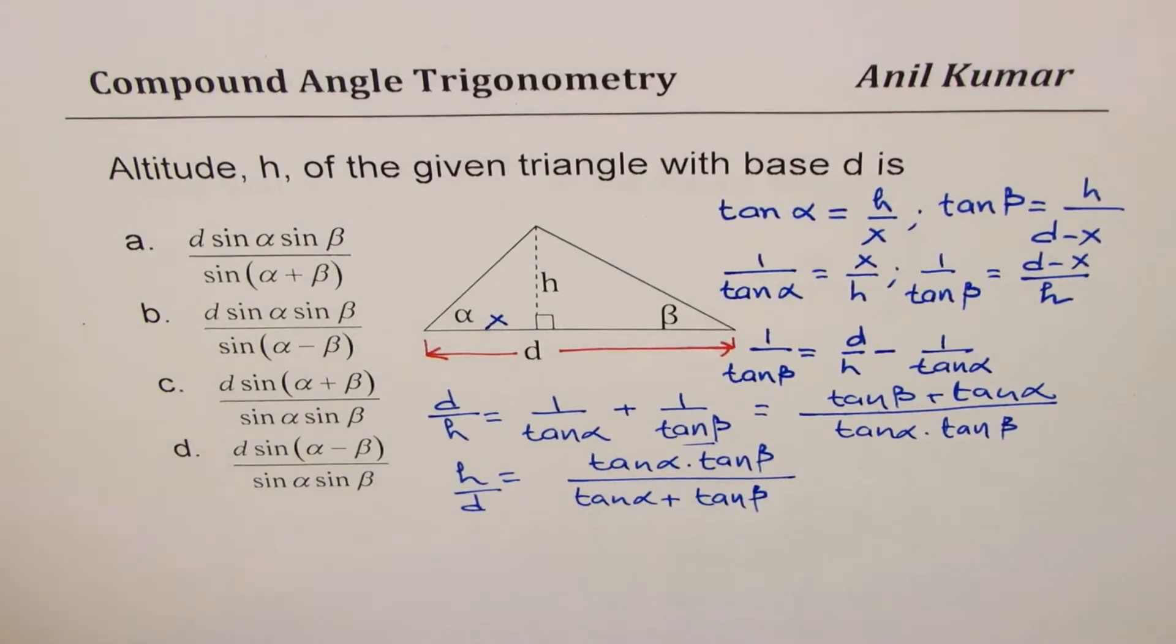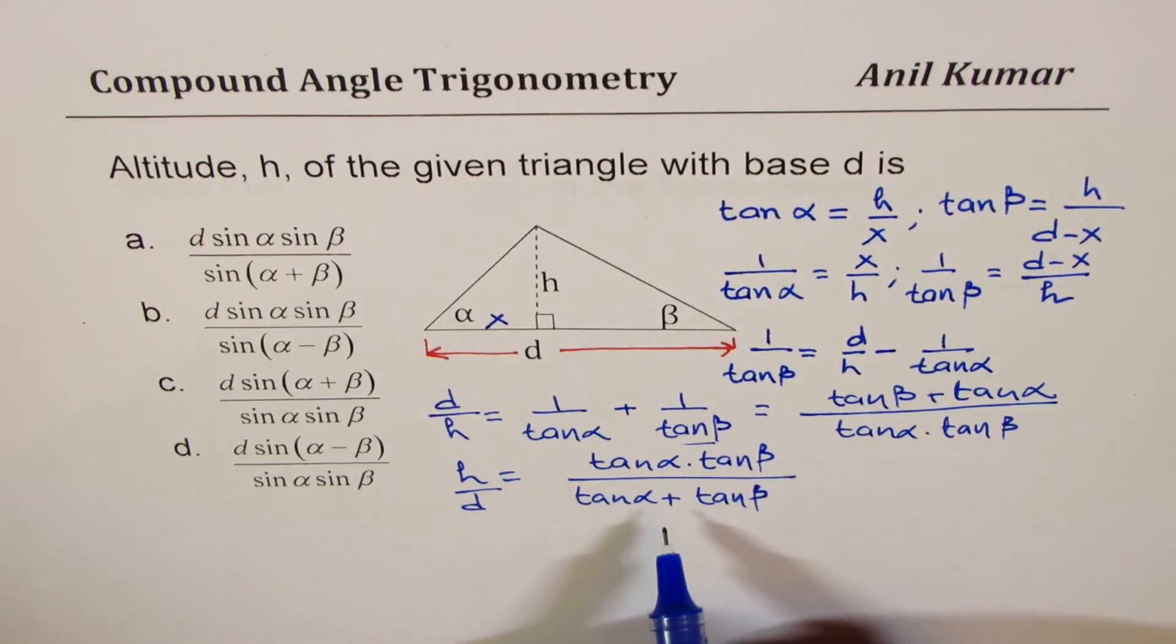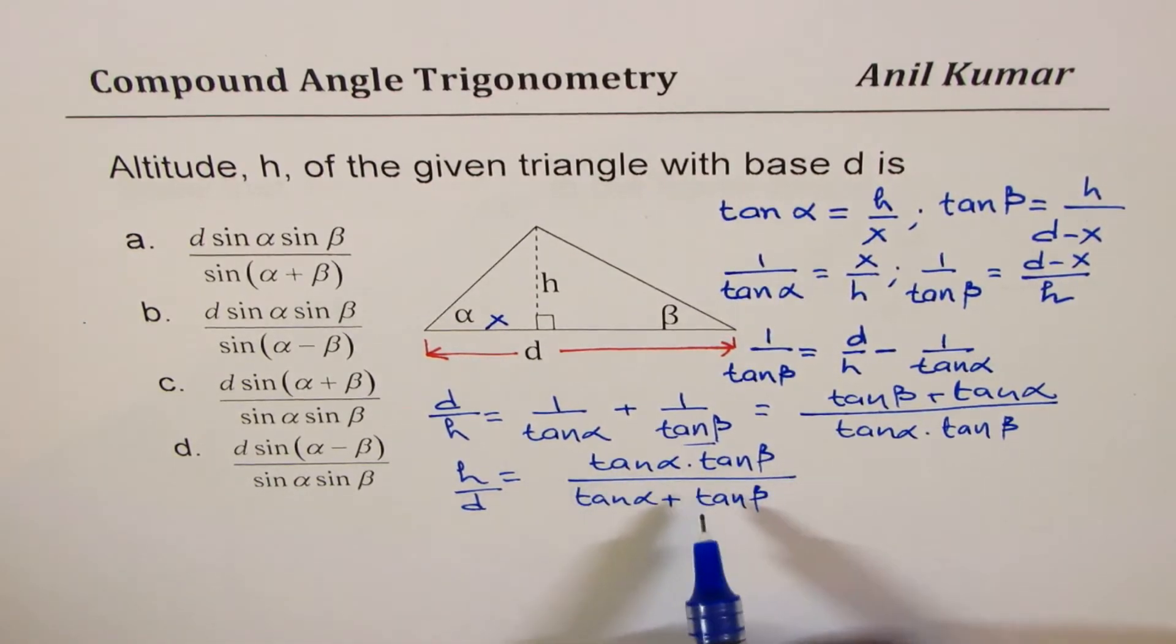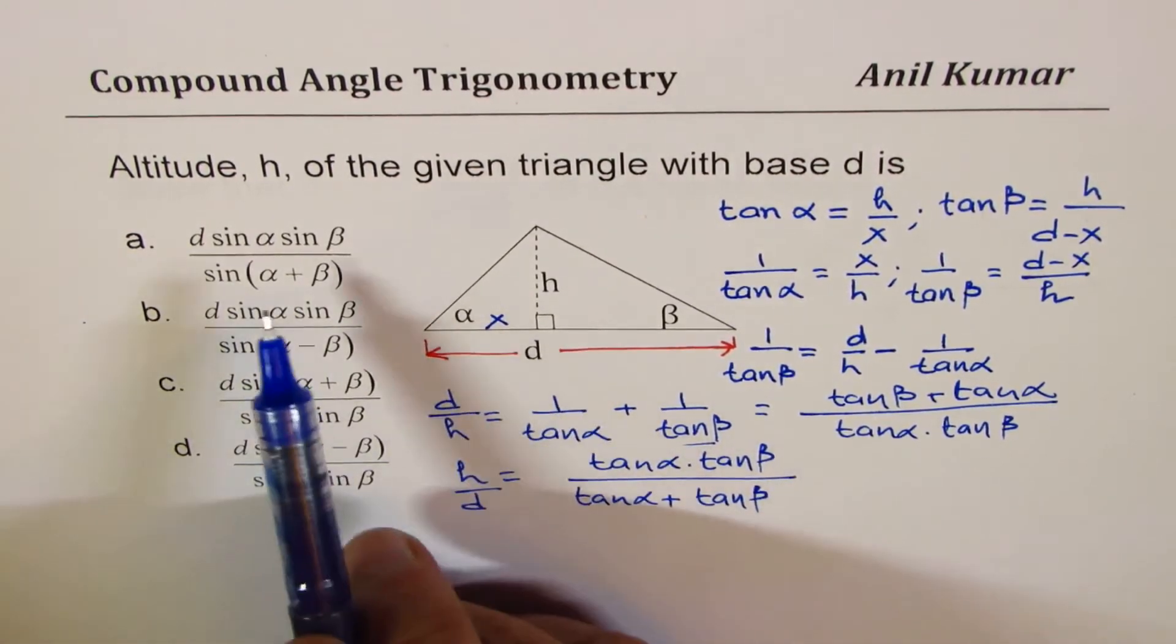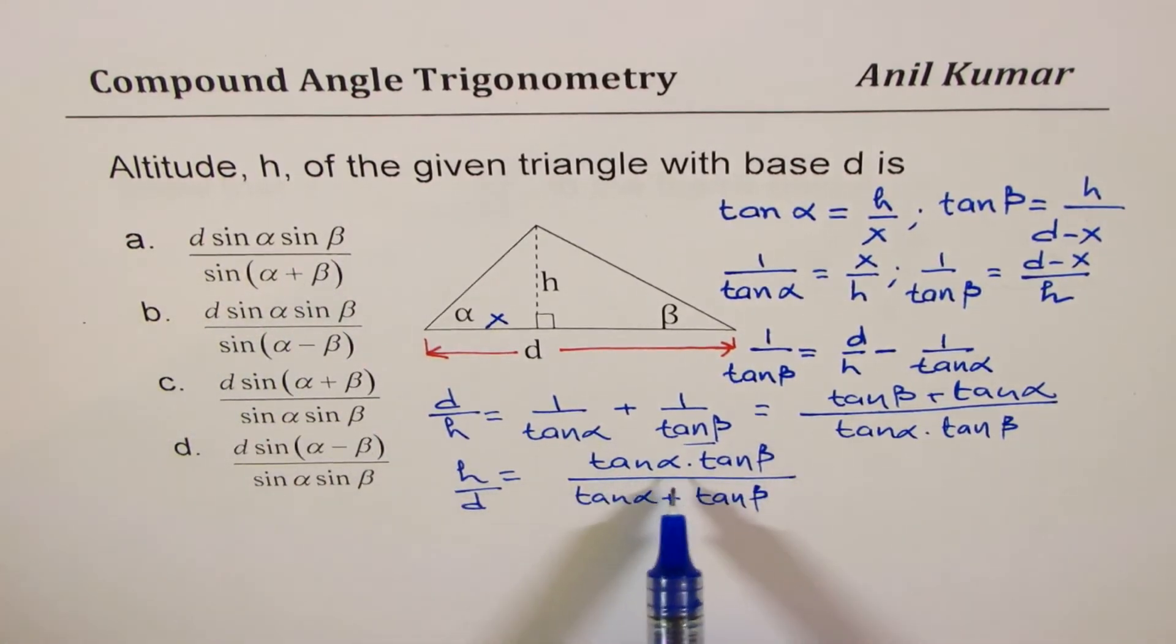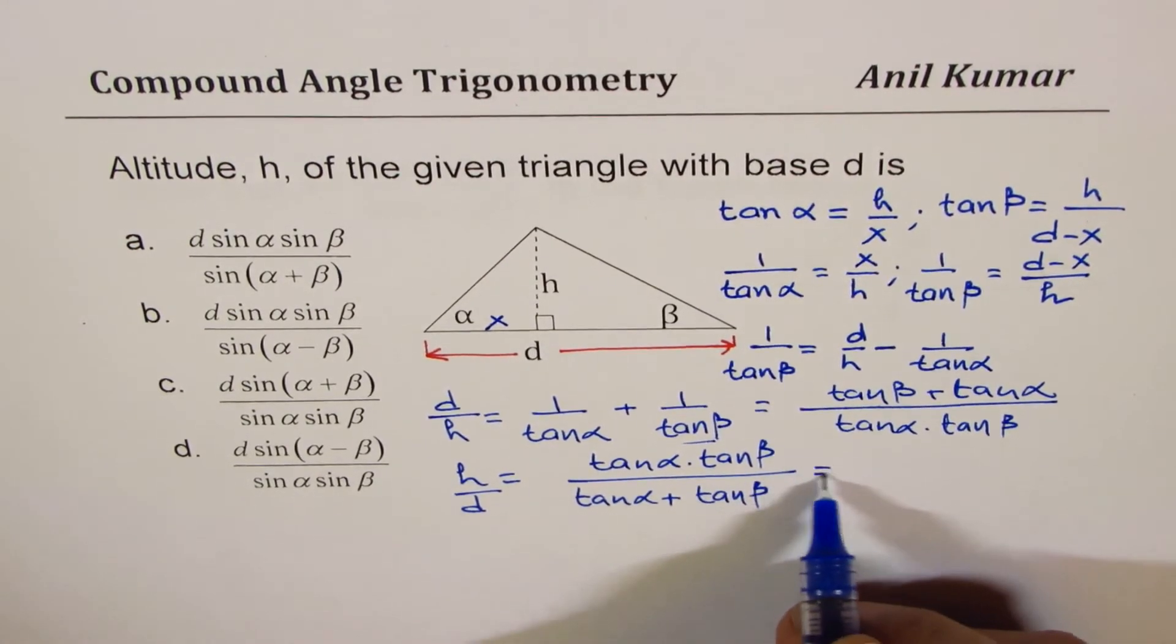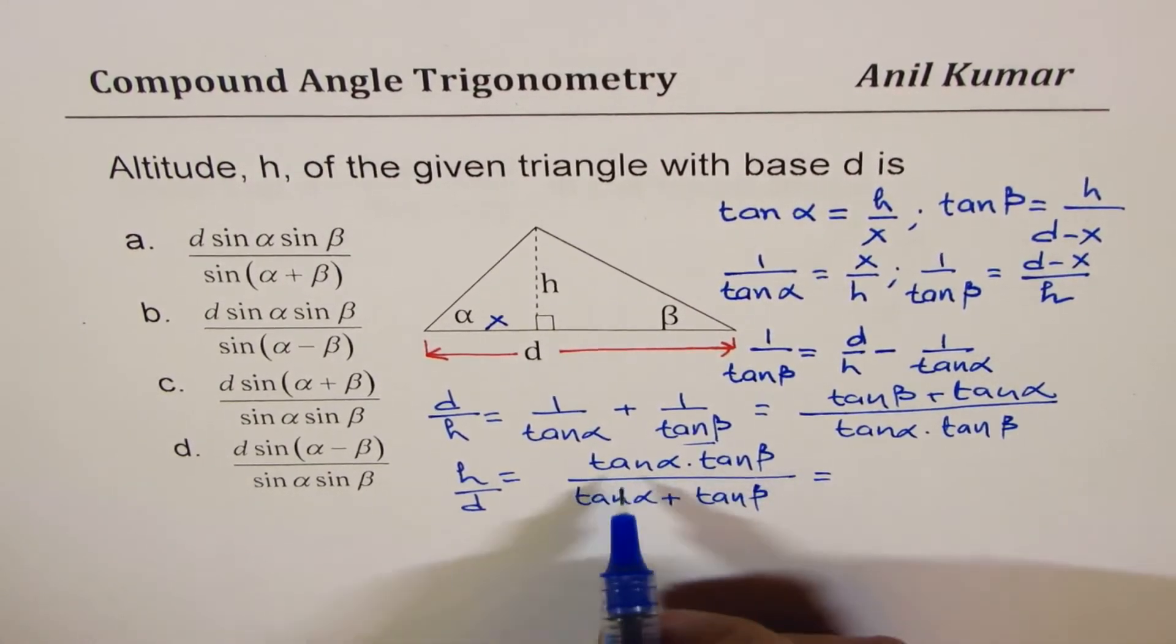Now we have to actually get it in this form of sine α sine β. So what we can do is that tan is sine over cosine. Let's write them in terms of sine and cosine.